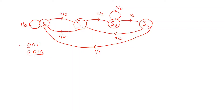For each of the states we have defined, we have specified what happens if we have a zero as input — both what the output is and what the next state is — and if we have a one as input, what the next state and output are.